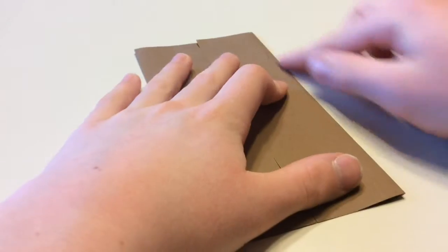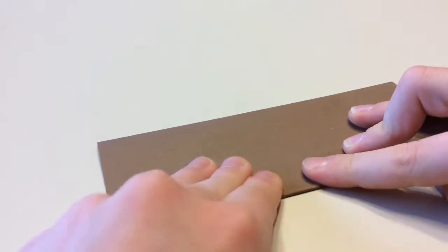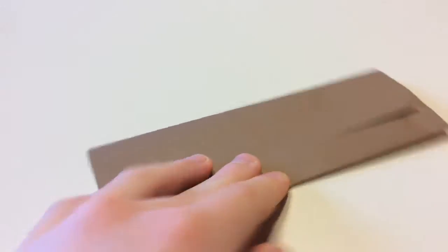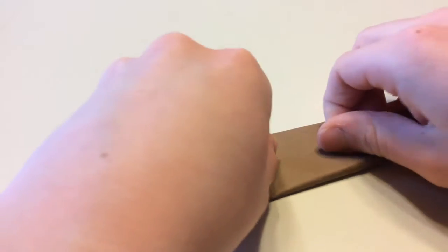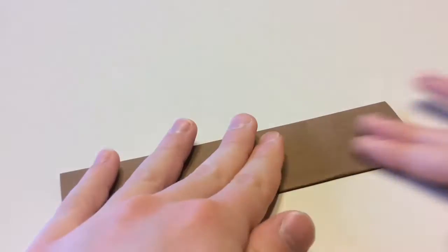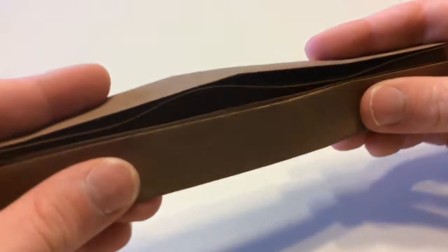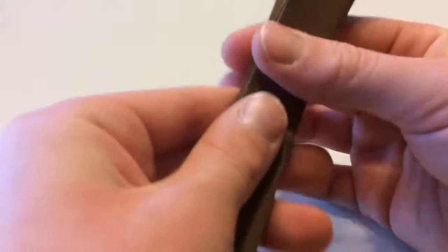And then again, fold these two edges to the middle. There we go. I'm just rushing here because I want to get all of the models in this video in a short amount of time. And then just fold it in half like this. So, now we have the letter base right here.